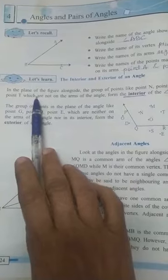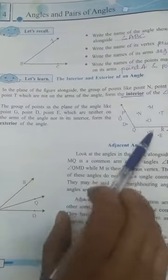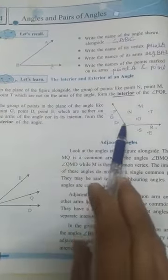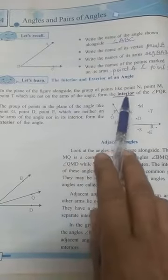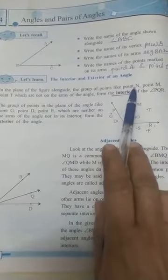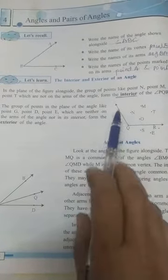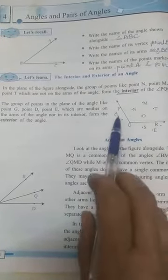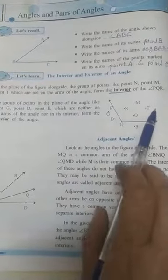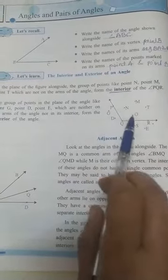See, in the plane of the figure alongside, the group of points like point N, point M, point O, point T, which are not on the arm, form the interior of the angle PQB.